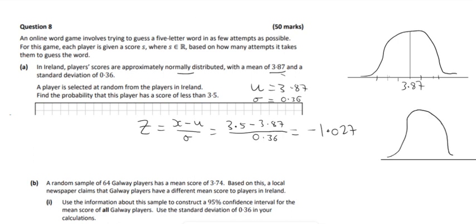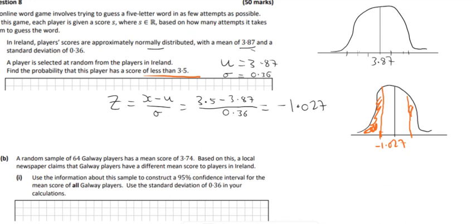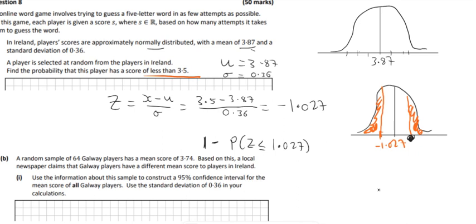The z-score of −1.027 is in the negative region of the normal distribution. We want the area to the left of that point. Because it's negative, we find the area on the other side and use: 1 − P(Z ≤ 1.027). So we look up the z-score for 1.027 in the log tables and then do one minus that value.